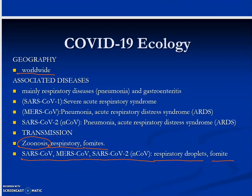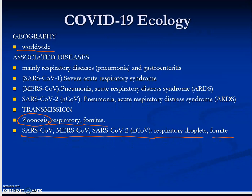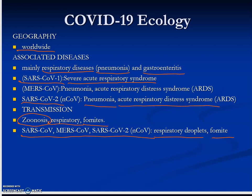On COVID-19 ecology: the virus has worldwide distribution. Associated diseases are mostly respiratory — in the worst case, pneumonia — and also gastroenteritis. People with severe disease need ventilators, consistent with severe acute respiratory syndrome. SARS-CoV-1 causes severe acute respiratory syndrome. SARS-CoV-2, the novel coronavirus, causes pneumonia and acute respiratory distress syndrome in many people. MERS, the Middle Eastern respiratory syndrome coronavirus, also causes pneumonia and acute respiratory distress syndrome.